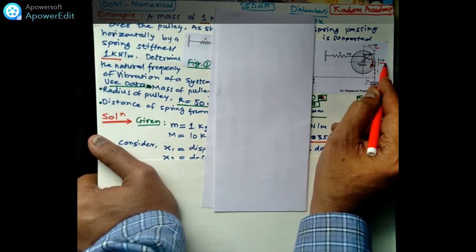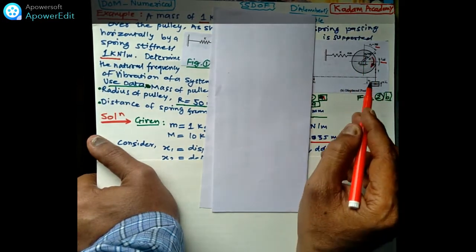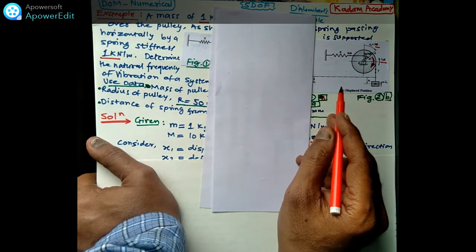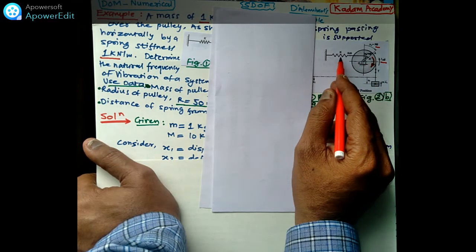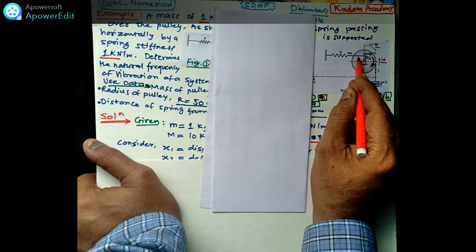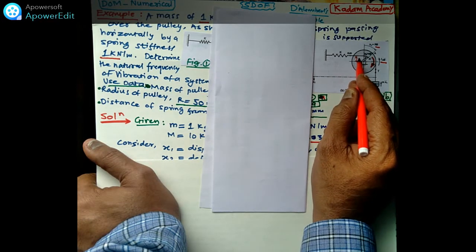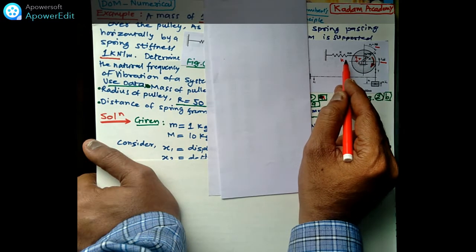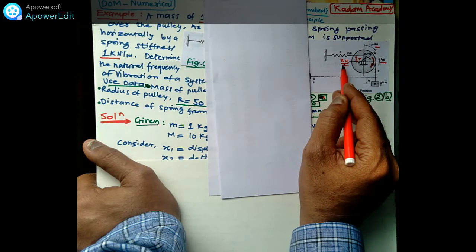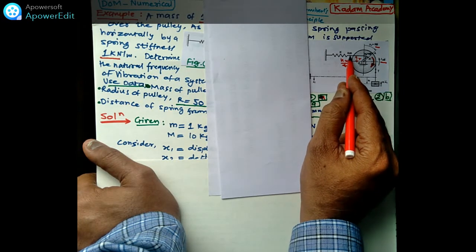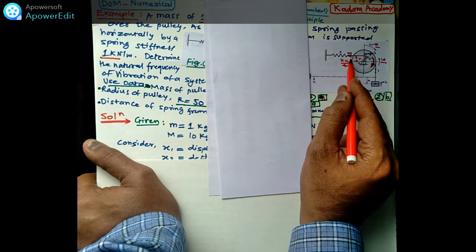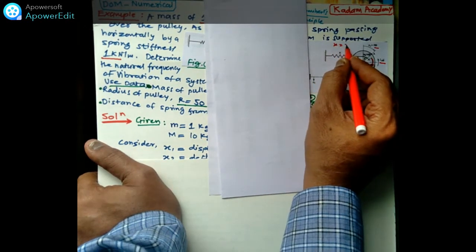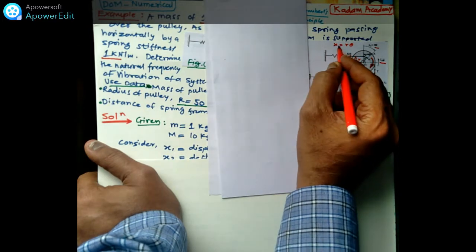The angular acceleration theta-double-dot creates a restoring torque equal to I_O·theta-double-dot inside the pulley. Due to the rotation, this torque acts at a distance of capital R. The spring is connected at a distance of small r from the center. The spring deflection x2 equals small r·theta — not capital R, because the spring is attached at distance small r from the center line.